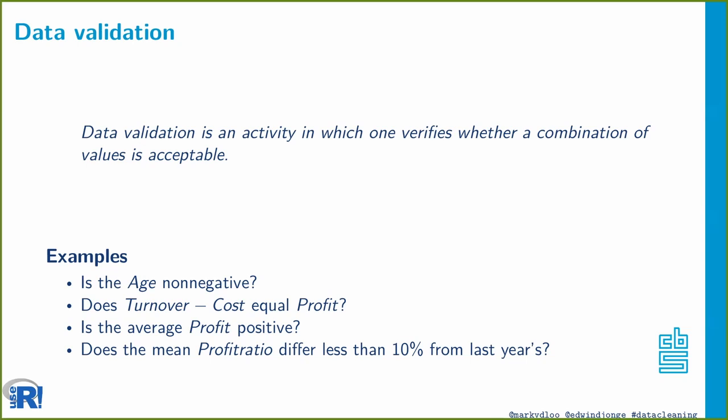In principle this could mean somebody sitting with a rubber stamp looking at data on paper, stamping red if it's wrong and green if it's okay — but we like to automate these things. The idea of 'combination of values' is subtle: it can mean a single data point like checking if age is non-negative, or it can mean something like turnover minus cost equals profit, which already needs three data points.